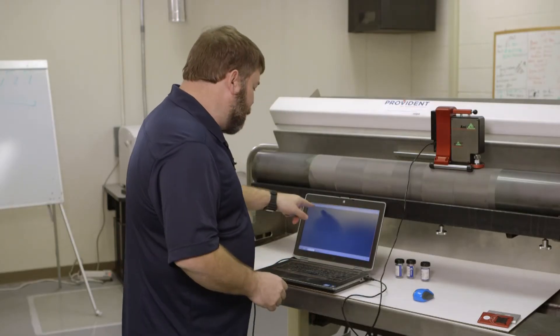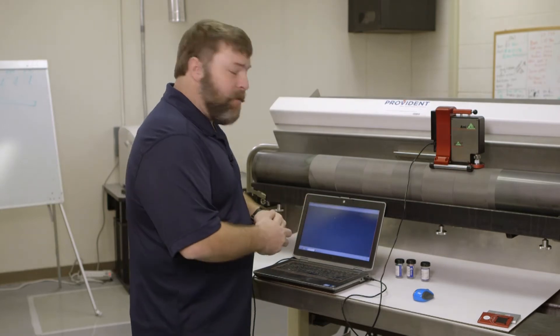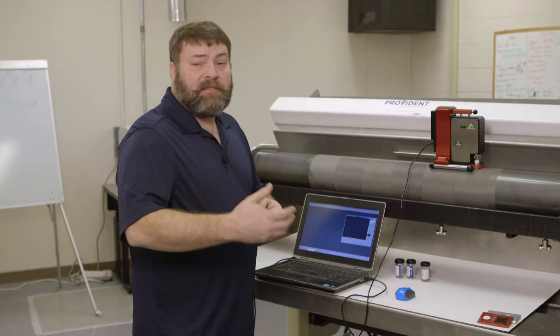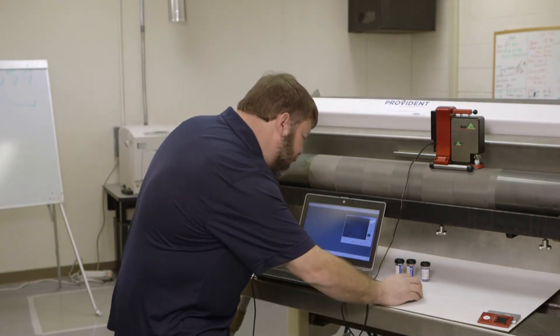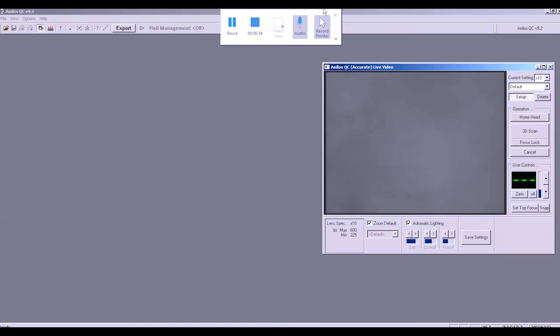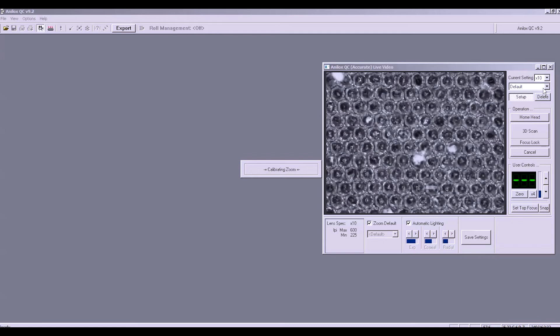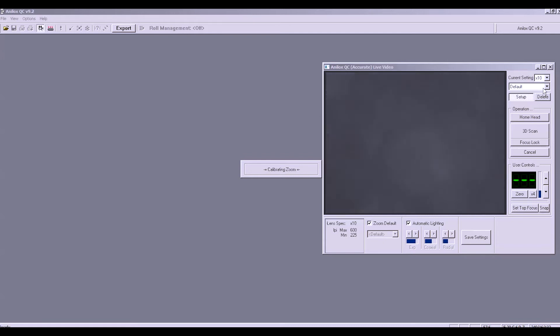Once it's in position, I have my analog QC program started here. I'm going to start the video feed and then I just need to make sure that the video feed has the correct lens chosen. So I'm going to choose the 10 power lens. And it's automatically homing the head, which is a rough adjustment. So I'm going to let it do its rough adjustment. Once this box goes away, we should be able to see the analog roll.